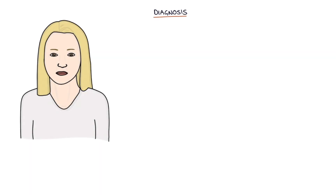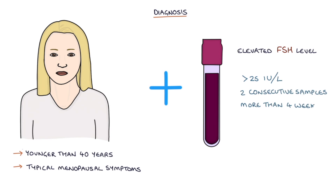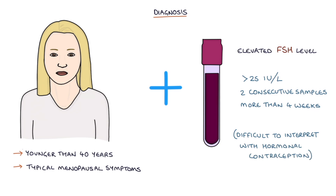How is it diagnosed? The NICE guidelines on menopause from 2015 say premature ovarian insufficiency can be diagnosed in women younger than 40 years with typical menopausal symptoms plus an elevated FSH level. The FSH level needs to be persistently raised more than 25 international units per litre on two consecutive samples separated by more than four weeks. The results are difficult to interpret in women taking hormonal contraception, as this will affect the FSH level.